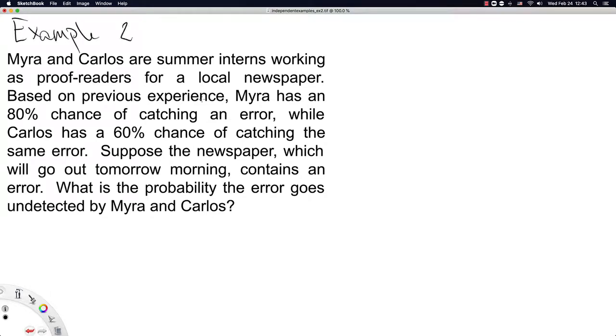Example 2. Myra and Carlos are summer interns working as proof readers for a local newspaper. Based on previous experience, Myra has an 80% chance of catching an error. So let's just say the probability of Myra catching an error is 0.8. We could represent that symbolically as such. While Carlos has a 60% chance of catching the same error. So then we could say P(C) is equal to 0.6.